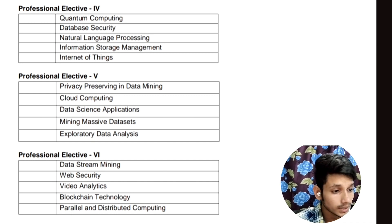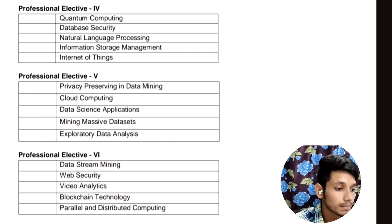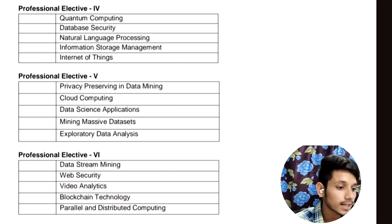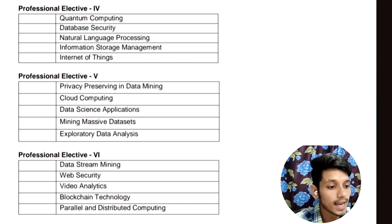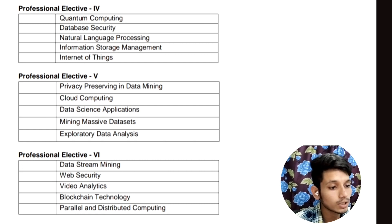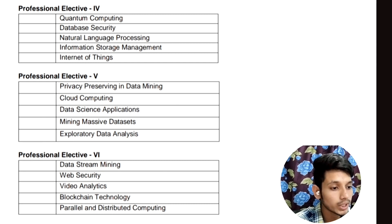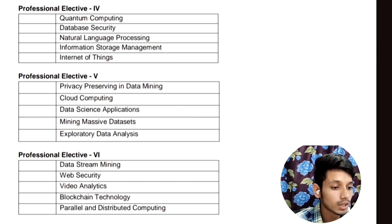In Professional Elective 5, the subjects are Privacy Preserving in Data Mining, Cloud Computing, Data Science Applications, Mining Massive Data Sets, and Exploratory Data Analysis. In Professional Elective 6, the subjects will be Data Stream Mining, Web Security, Video Analytics, Blockchain Technology, and Parallel and Distributed Computing.